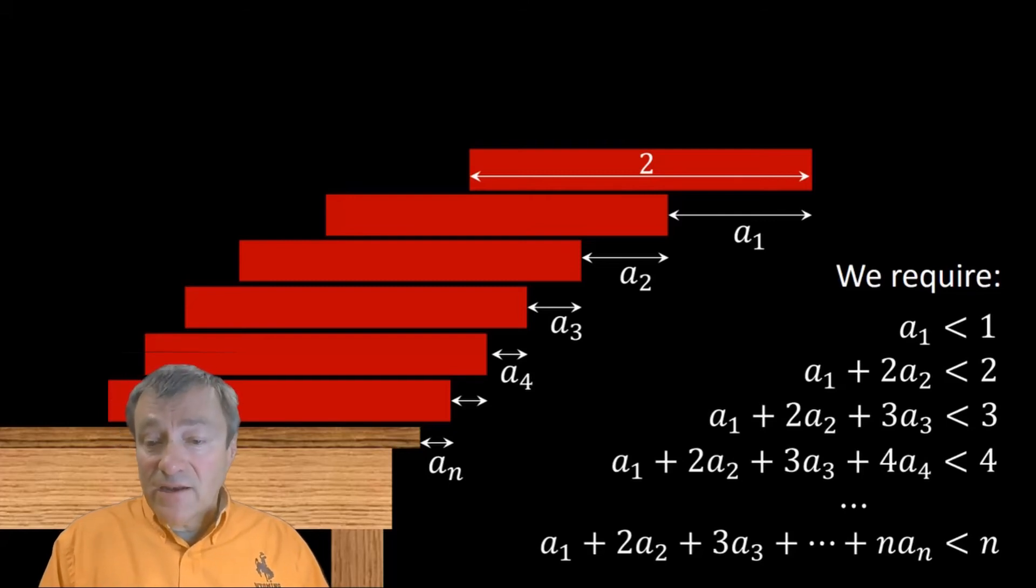Now, the question is, can you actually find n unknowns, A1, A2, A3, up to AN, satisfying these n inequalities? And if you can, then, what's the largest amount that you can get the entire stack to lean over, which is the sum of the AIs?